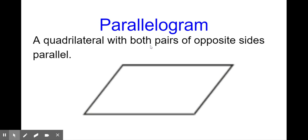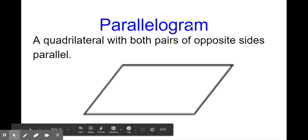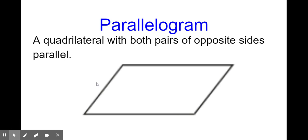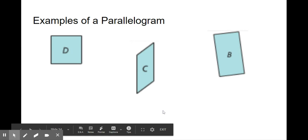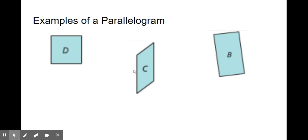So a parallelogram is a quadrilateral with four sides and both pairs of opposite sides parallel. This is an opposite side and this is an opposite side, and they are both parallel to each other. Remember, all opposite sides are parallel — they'll go on forever in those directions and never touch. Again, if you look here and right here, those are both parallel to each other.